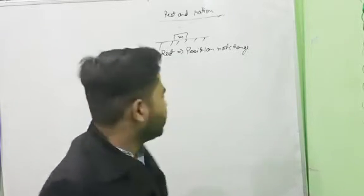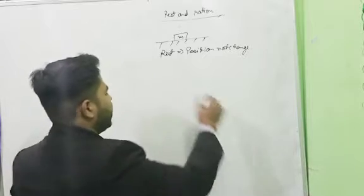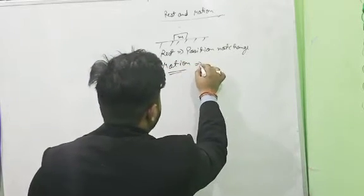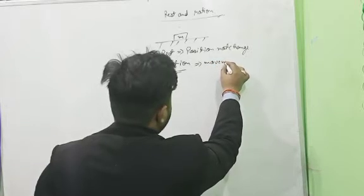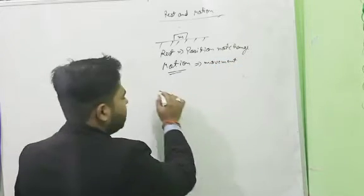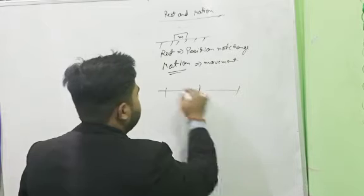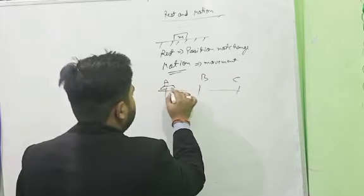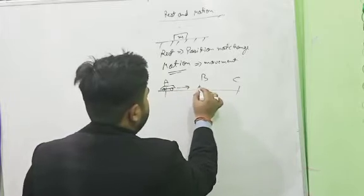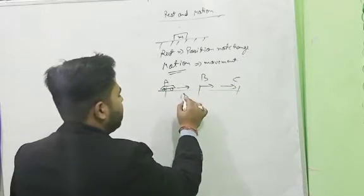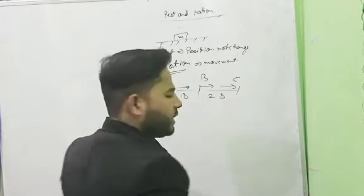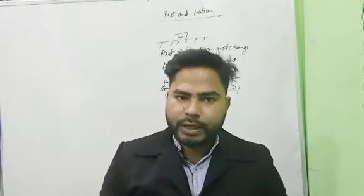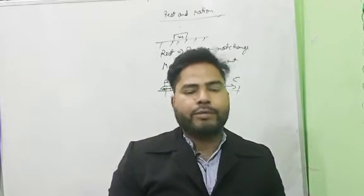Now we are starting motion. What is motion? If the position of an object continuously changes, it is called motion. Motion simply means a movement. Suppose a car is continuously moving — it is the example of motion. The most important thing is that motion is relative, not absolute.